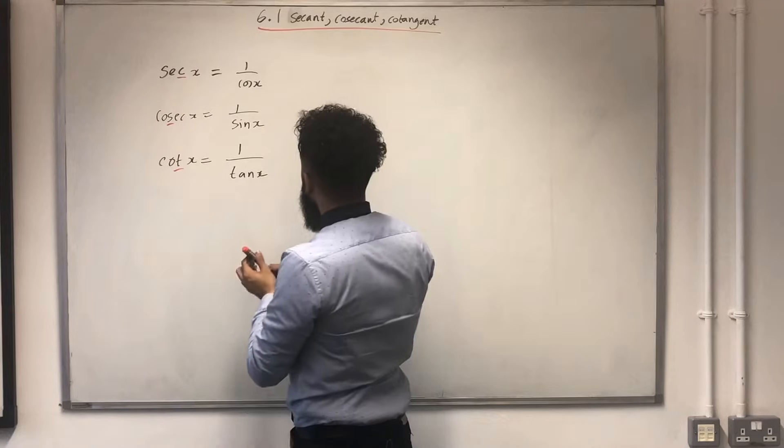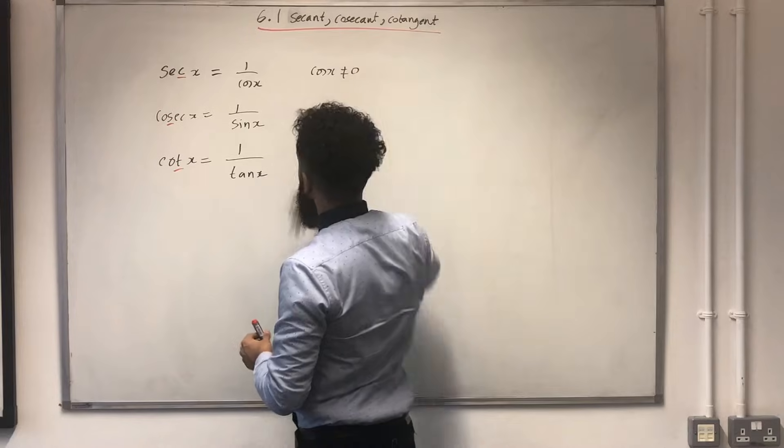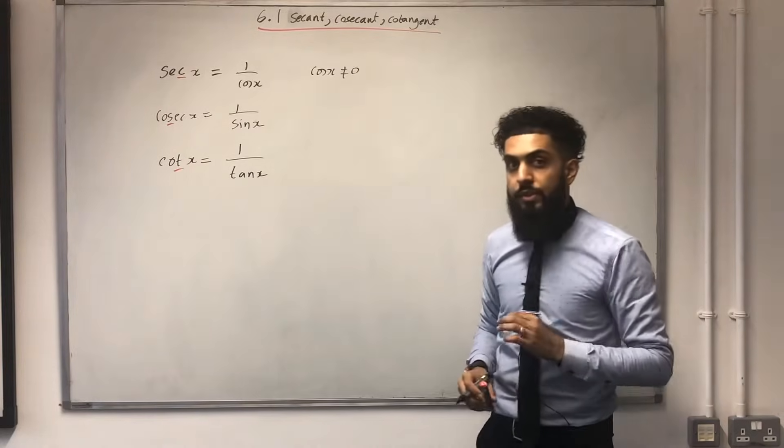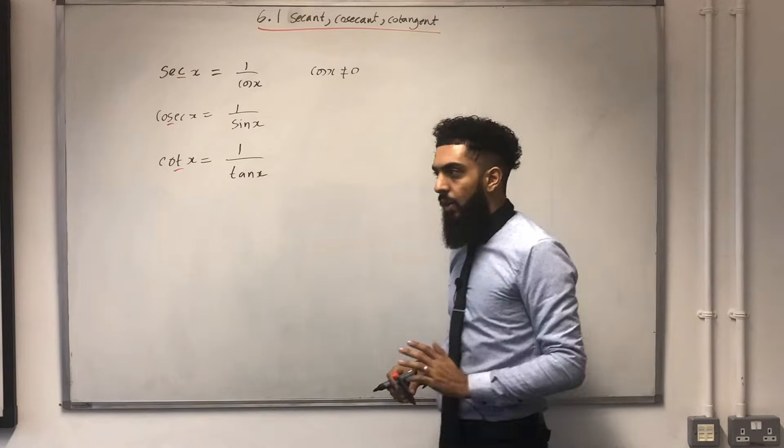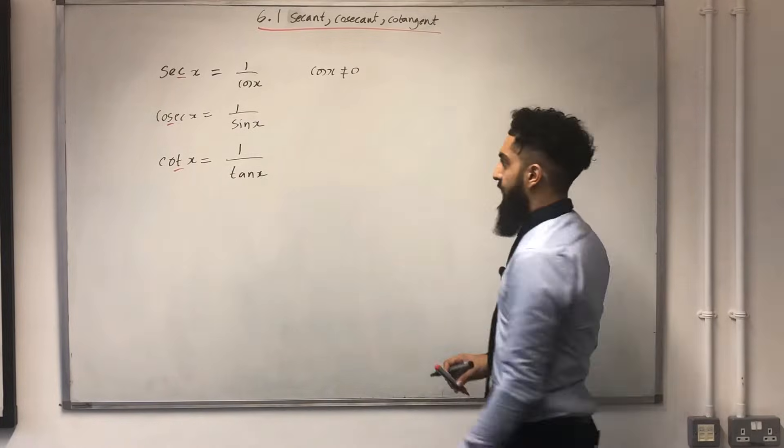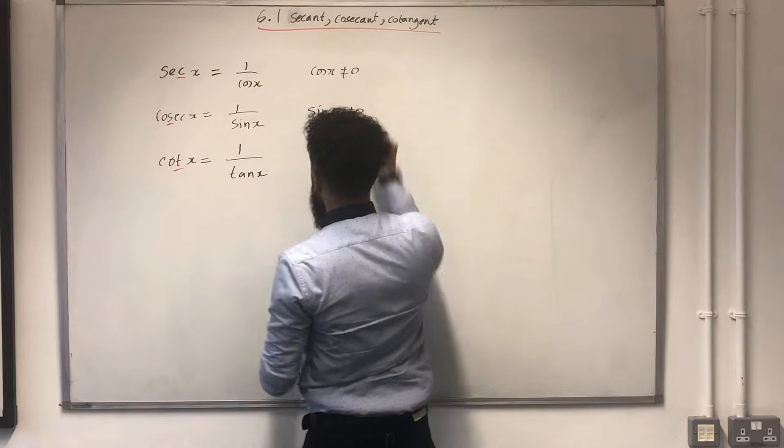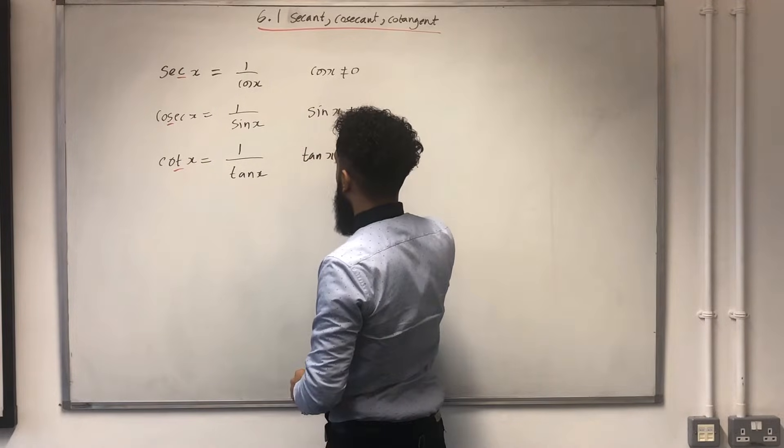For the first one, cos x is not equal to 0, because if cos x is equal to 0, you will have 1 divided by 0, which you cannot do. You'll get math error on your calculator. For the second one, sin x is not equal to 0. Third one, tan x is not equal to 0.